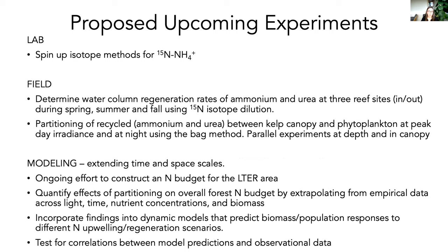For proposed experiments, in the lab we need to spin up an isotope method for measuring stable isotope ratios in ammonium, which has been challenging. The analytical lab is finally back online and we're working through some mass spectrometry issues. Once Natalie and I can be in the lab at the same time, we can hopefully get that going in the field, start measuring regeneration rates, and take on the experiments mentioned. The nitrogen budget modeling is a big part of this, and we're involving the group at UCLA to compare our empirically-derived nitrogen budget with their model to see where they differ.